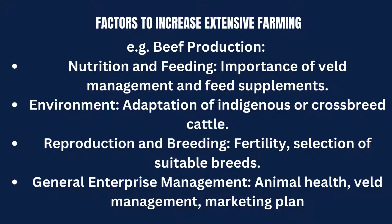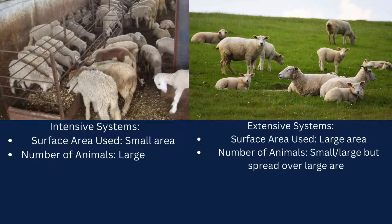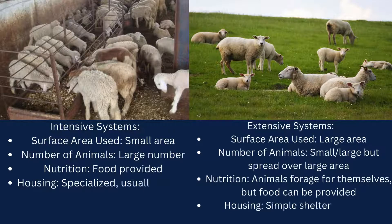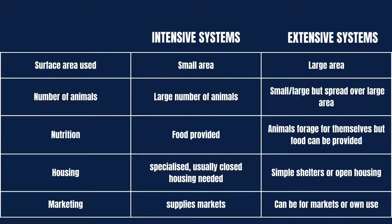As we conclude, I hope you have gained valuable insights into the diverse world of animal production systems. Understanding these systems and the factors influencing production is essential. This is one of the easiest topics — you just need to know the differences: one system is in an enclosed small area, the other is in an open area. Go back to the table I created — it makes everything easier. Whether it's intensive or extensive farming, proper management is key to ensuring the well-being of our animals and the production of our farms.